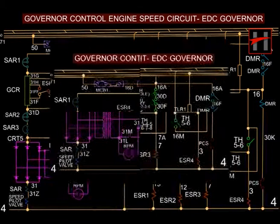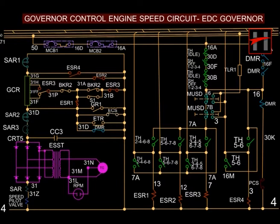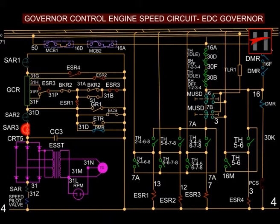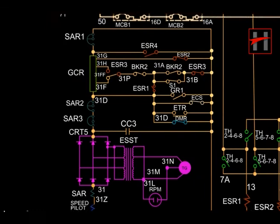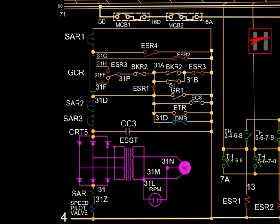Rheostat SAR-1 and SAR-2 are used to set the 8th notch and the 1st notch or idle speed respectively. Rheostat SAR-3, which is normally set at zero resistance, provides a means to temporarily increase engine speed above the 8th notch in order to check the speed at which the overspeed device shuts down the engine. Devices intended to hold the engine speed at idle speed regardless of throttle position have control interlocks between cable number 31D and 4.